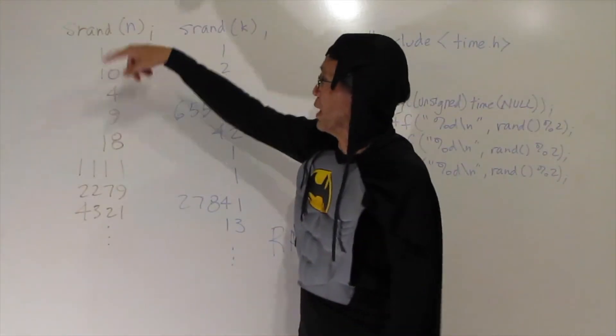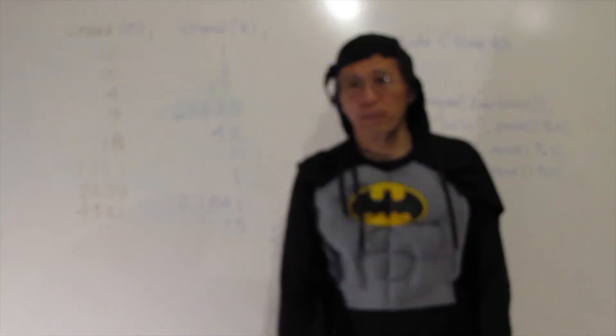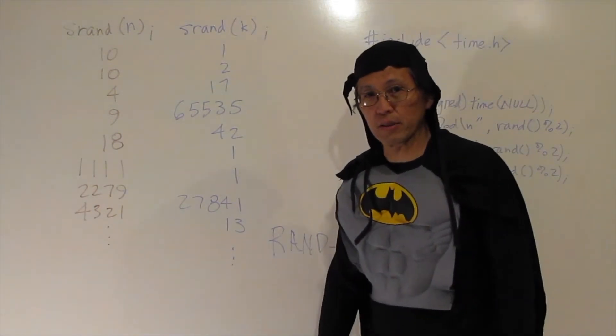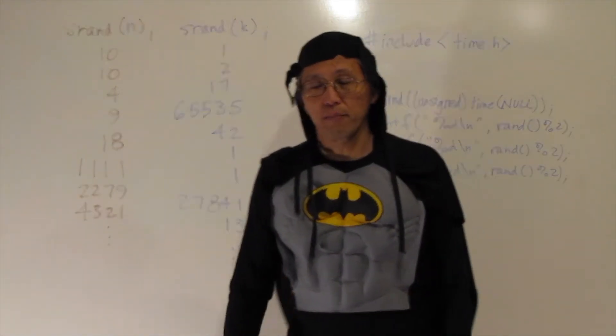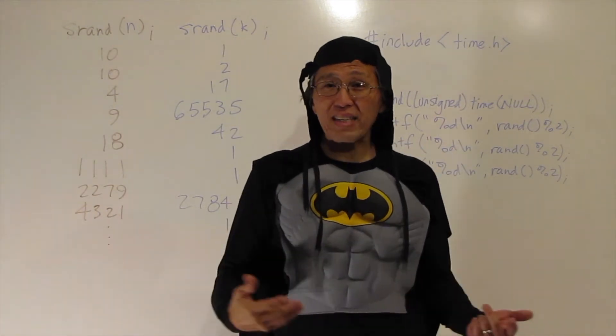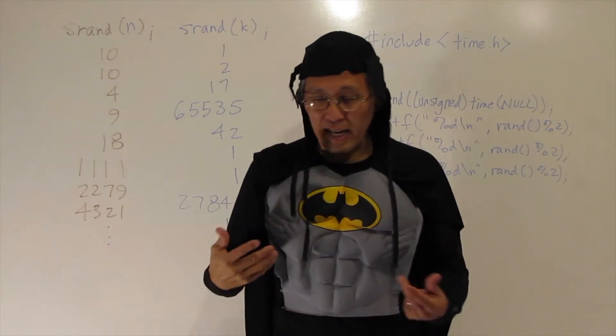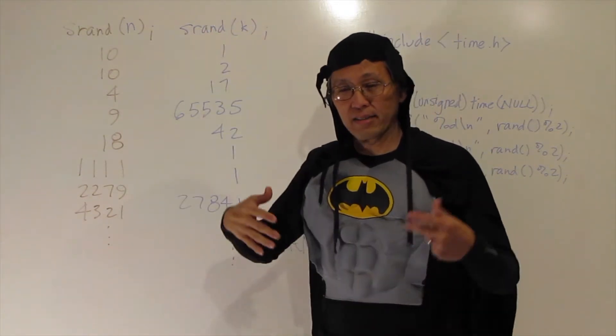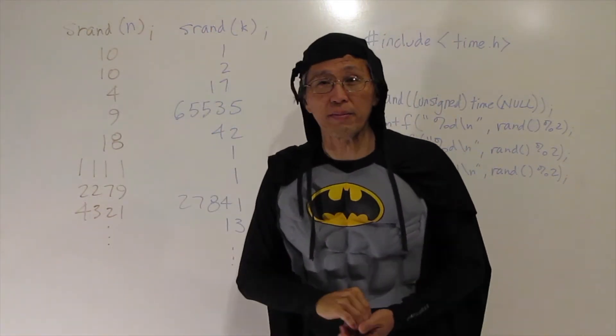you do SRAND or SRAND some number and it will generate the same list of random numbers every time. So if I did SRAND zero, it would generate some random number. If I did SRAND one, it would do some other random list of numbers. And that list would keep going based on some algorithm.